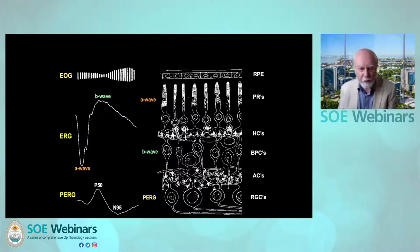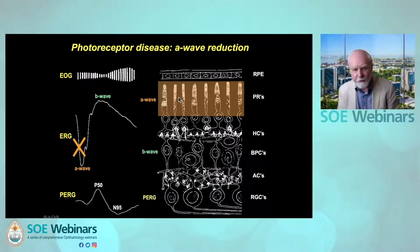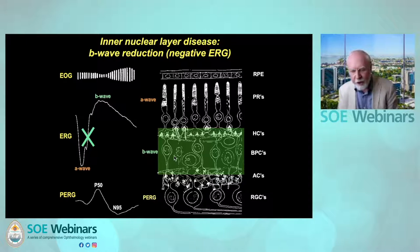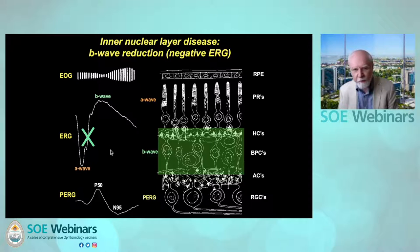To summarise the type of abnormality we get in ERG: if we have dysfunction of the photoreceptors, that will affect the photoreceptor-derived A wave and give global ERG reduction. Whereas if we have primary disease either at the bipolar cells themselves, at the synapse, or in the inner nuclear layer, then we will preserve the photoreceptor-derived A wave, affect the positive-going B wave, leaving a negative-going wave, which is known as an electronegative ERG.